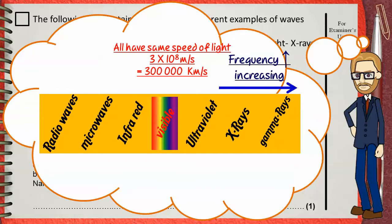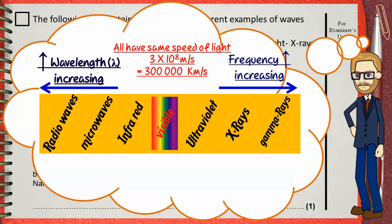As you go in the opposite direction from gamma to radio, the wavelength increases and of course the frequency decreases. You must know this and be able to answer all questions about this. You also must know uses and harms of these waves.